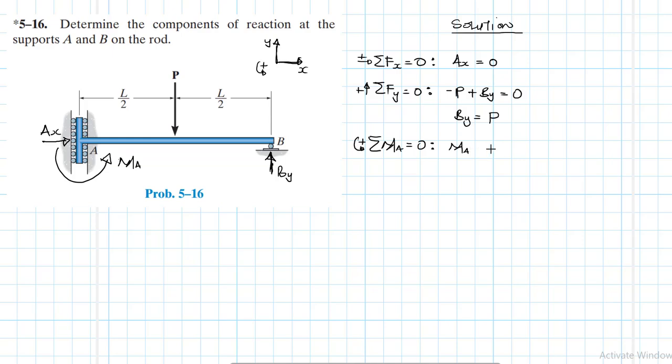minus P times the lever arm which is L over two, plus B plus B times the lever arm which is L, is equal to zero.